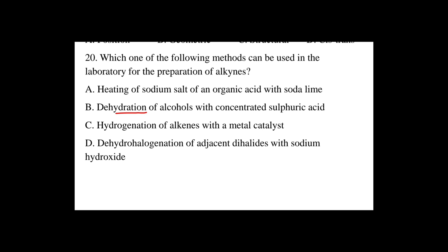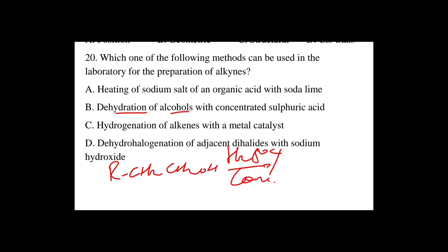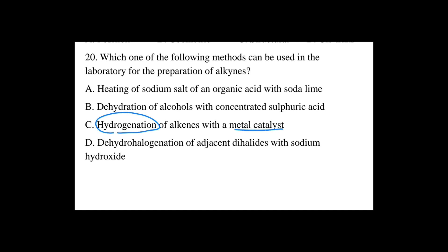Option B: dehydration of alcohols with concentrated sulfuric acid. Alcohol (CH2CH2OH) treated with concentrated H2SO4 undergoes dehydration — removal of water — to form an alkene with a double bond (RCH=CH2). Option C: hydrogenation of alkenes with a metal catalyst. Addition of H2 to an alkene (RCH=CH2) with a metal catalyst such as platinum converts the double bond to a single bond, forming an alkane.